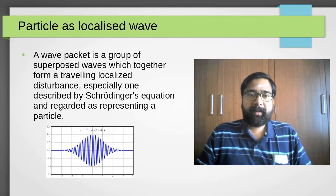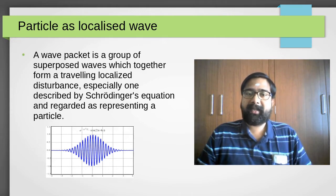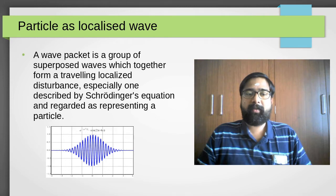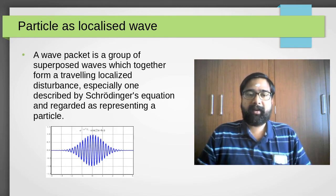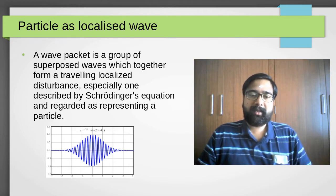For explaining the properties of particles that can behave like a wave, he considered a particle as a localized wave, which we call a wave packet. A wave packet is a group of superimposed waves which together form a traveling localized disturbance, and it can be described by Schrödinger's equation.